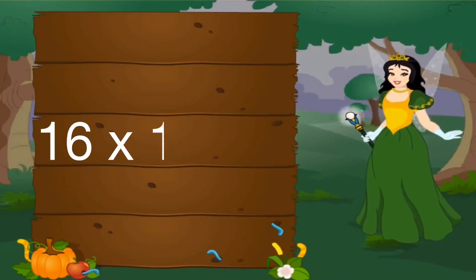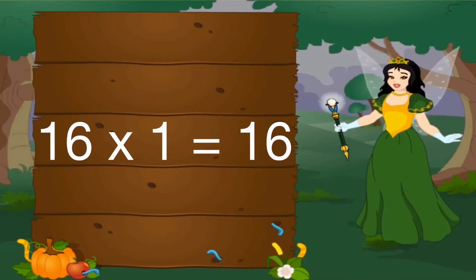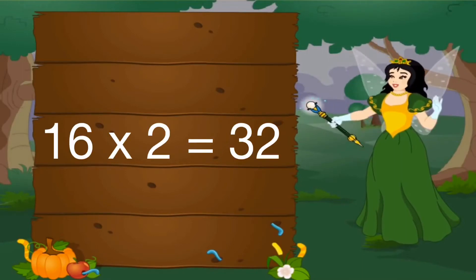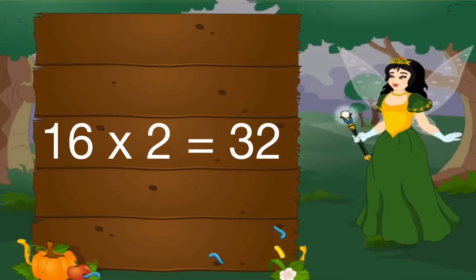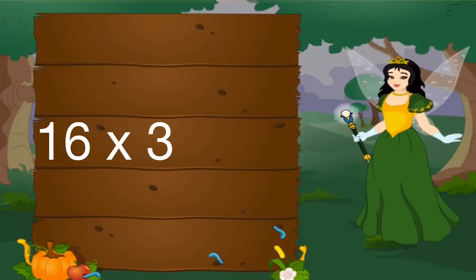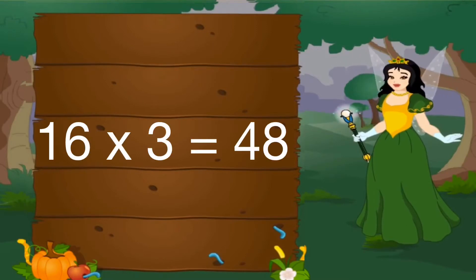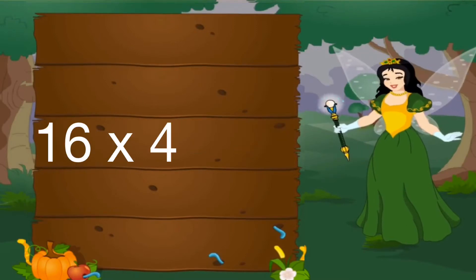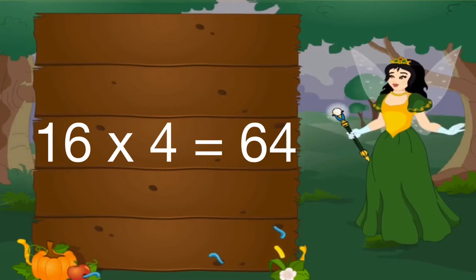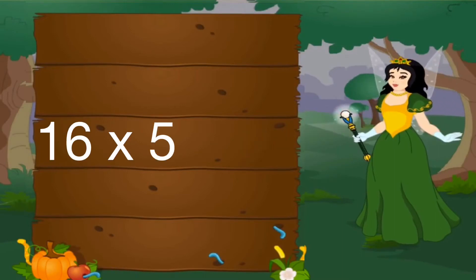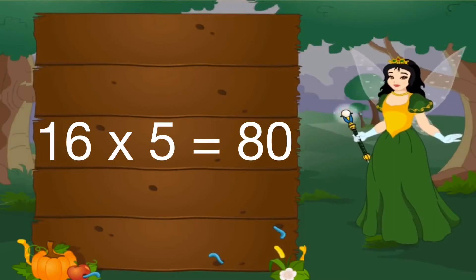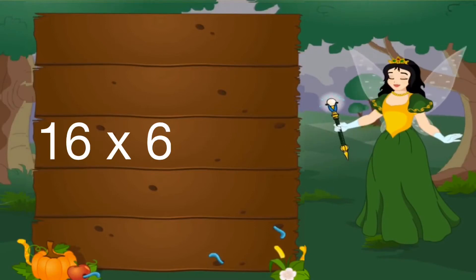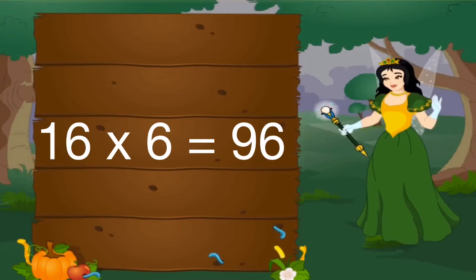16 ones are 16, 16 twos are 32, 16 threes are 48, 16 fours are 64, 16 fives are 80, 16 sixes are 96.